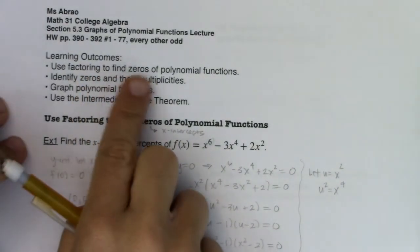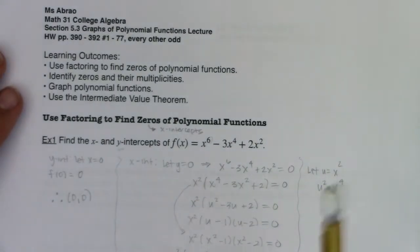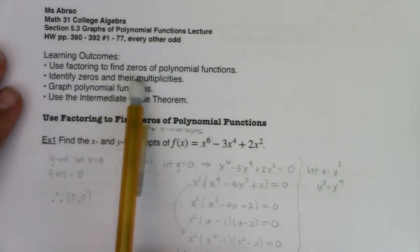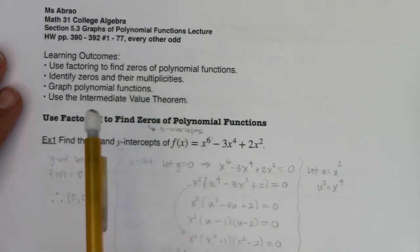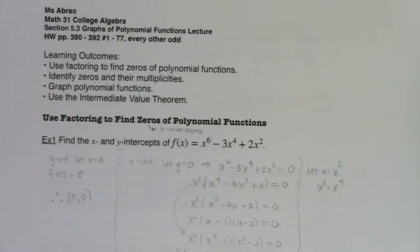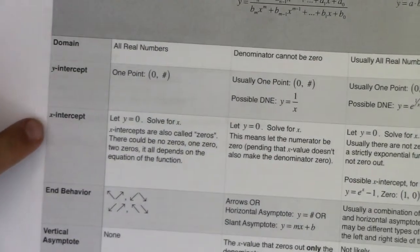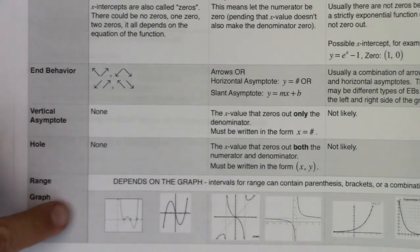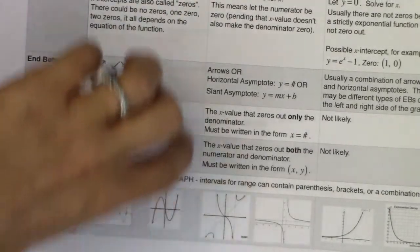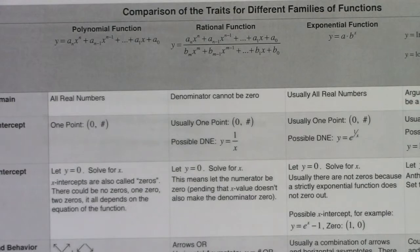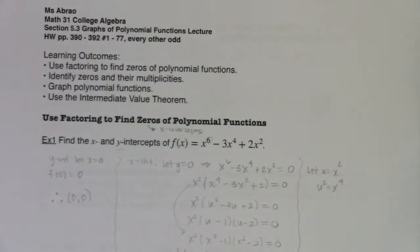That ends our time in section 5.3. Just to remind you where we've been in this section - we've talked about using factoring to find zeros of polynomials. We did examples where we factored by grouping and factored out the GCF. We reviewed use substitutions. We talked about zeros and their multiplicities, how even multiplicities touch an x-axis but odd multiplicities cross an x-axis. We graphed some functions, taking a look at those traits outlined in that comparison table.